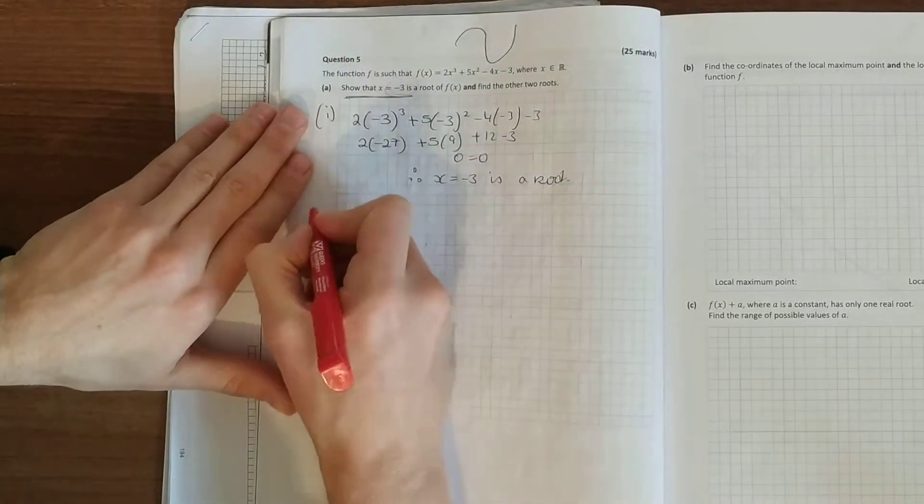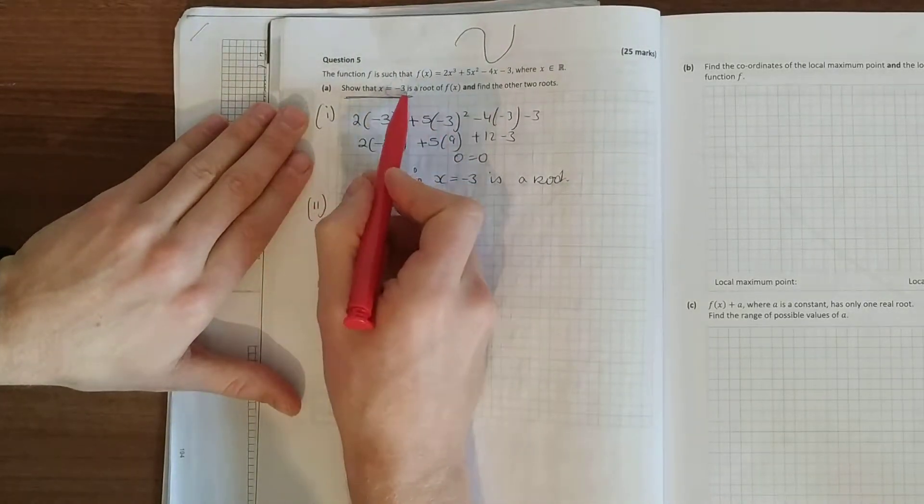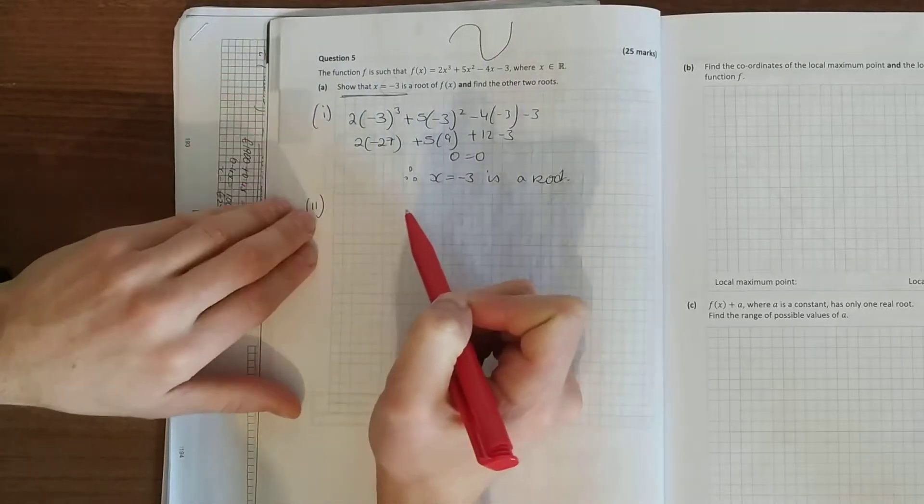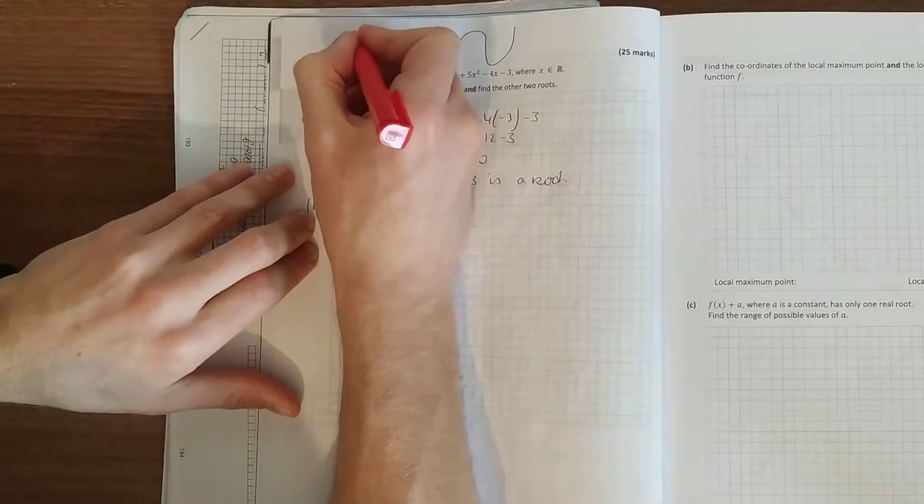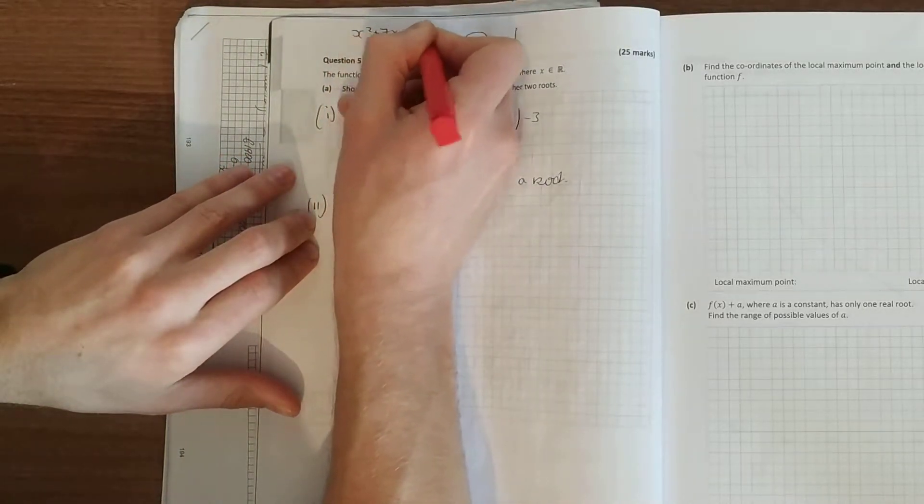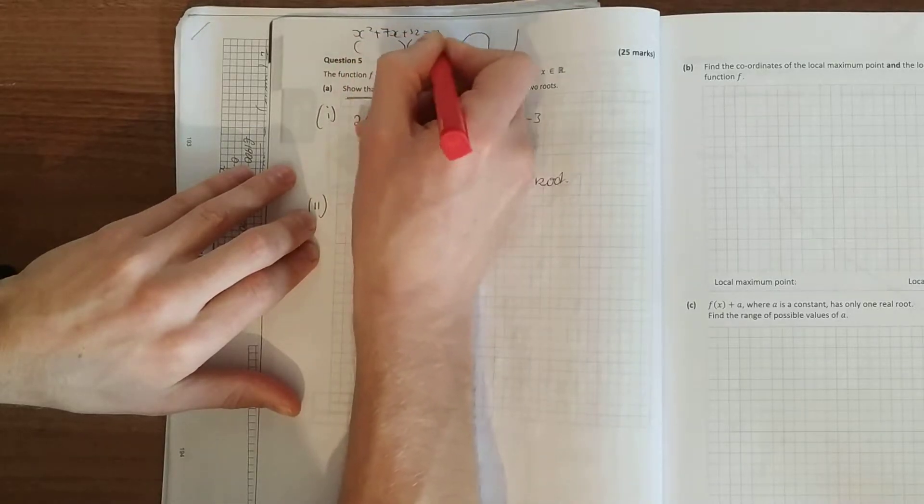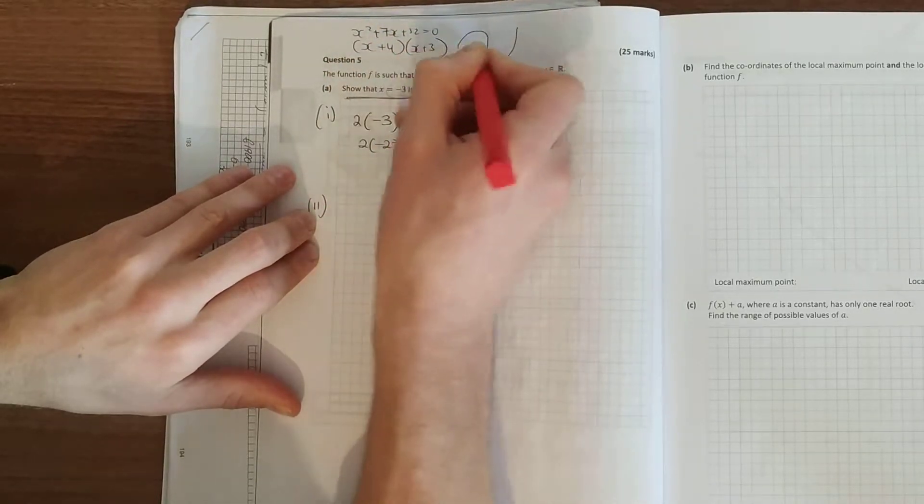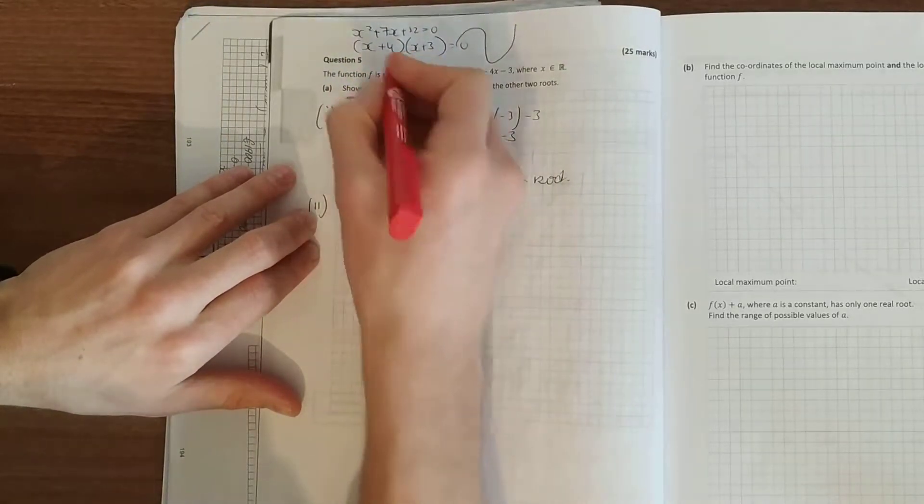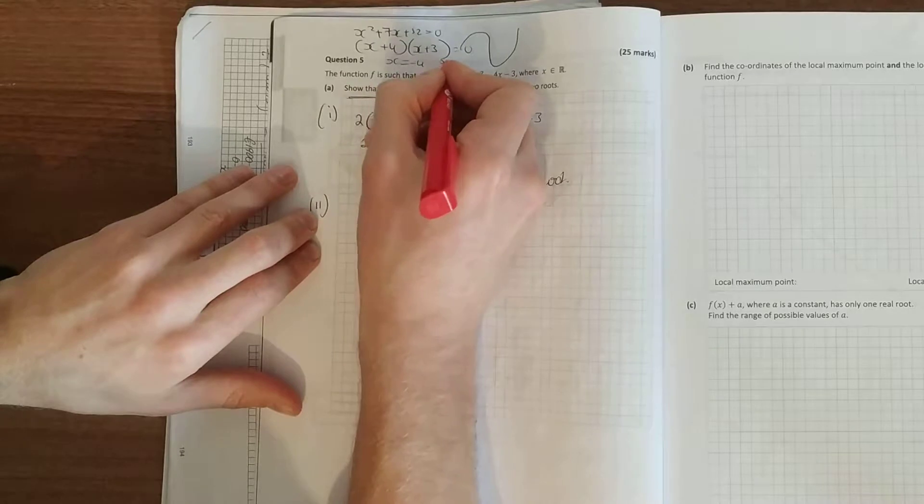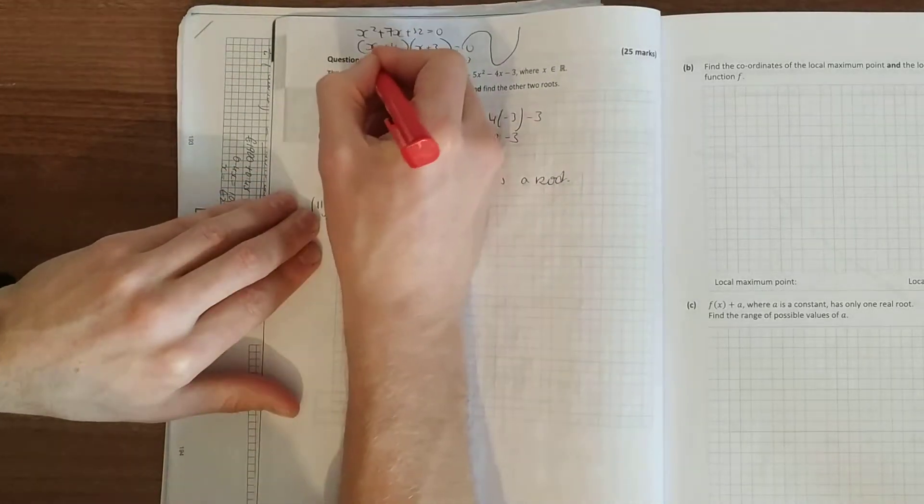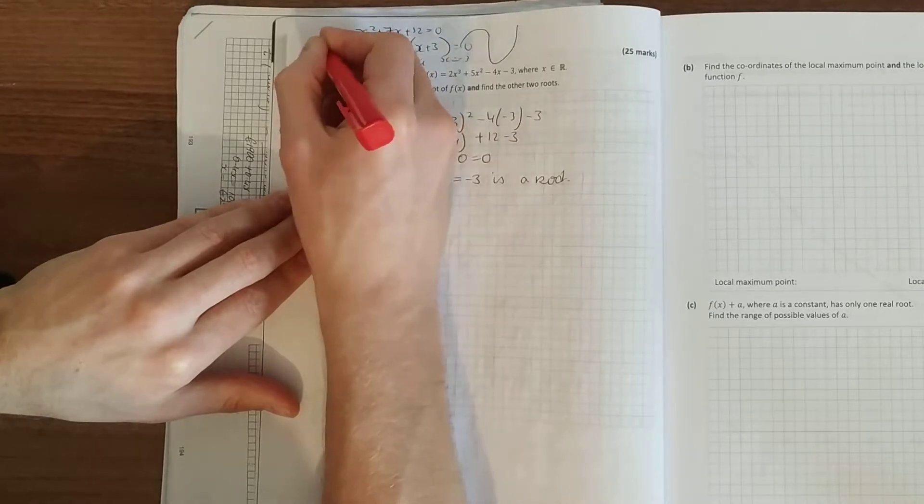And find the other two roots, so that's like the second bit. Now if x equal to minus 3 is a root, the factor of that is x plus 3. If you think of your quadratic, if you got down to x squared plus 7x plus 12, and your factor is x plus 4 and x plus 3. If you wanted to find the roots of that, you let each bit equal to 0, let each factor equal to 0, you get x equal to minus 4, x equal to minus 3. So here we're working in reverse, got a root, you must get your factor.